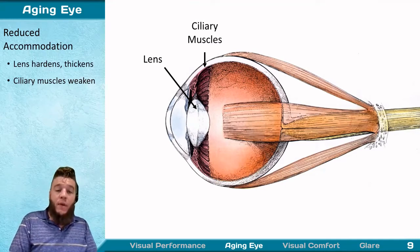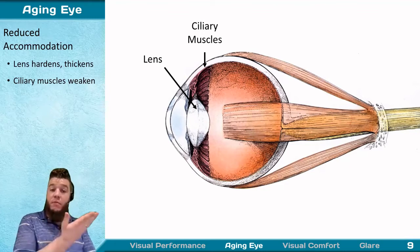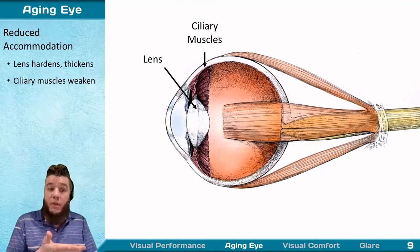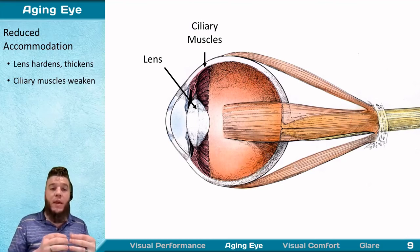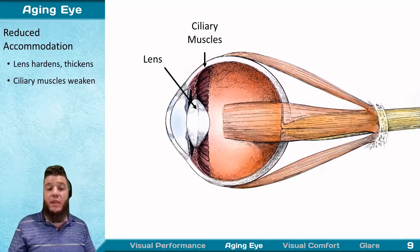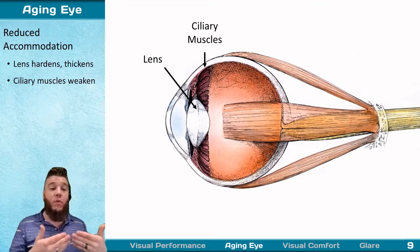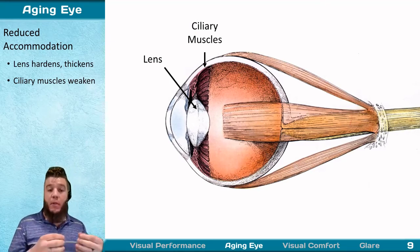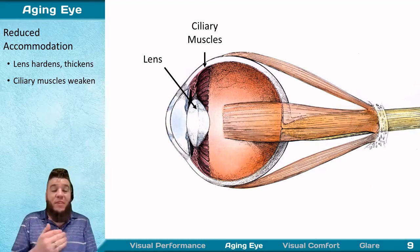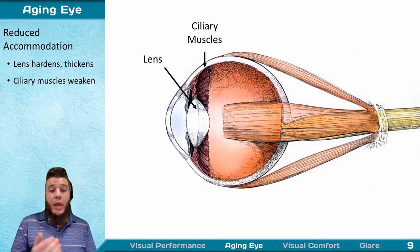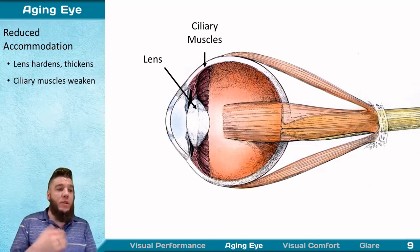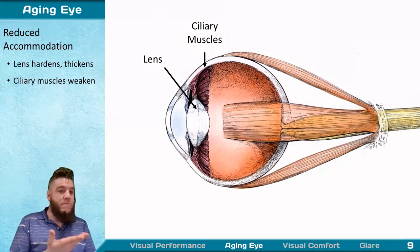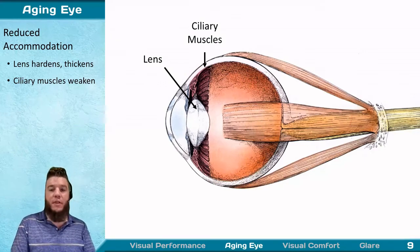The second effect is reduced accommodation. Your lens not only yellows, it also hardens and thickens over time, making it less flexible. This is compounded by the ciliary muscles also weakening. Weaker ciliary muscles are less capable of changing the shape of a harder, thicker lens. This leads to presbyopia, or age-related hyperopia — the reduced ability to focus on nearby fine detail, which is why most of your parents probably have reading glasses.